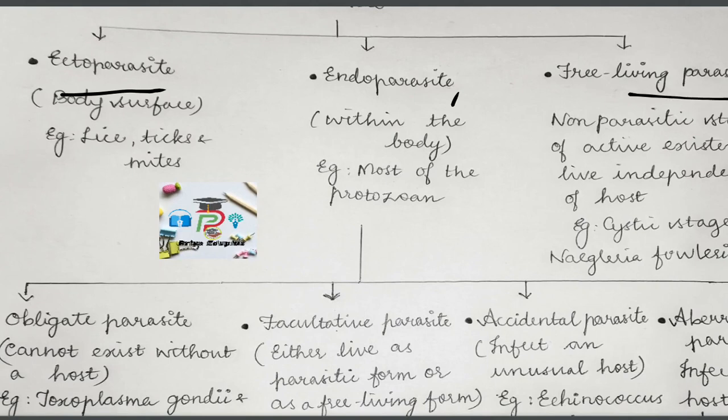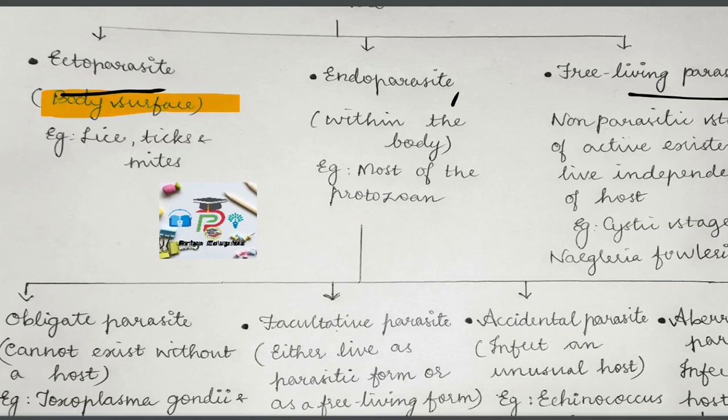What are ectoparasites? Ectoparasites are parasites that inhabit only the body surface of the host. They won't penetrate into the tissue; they will be residing only on the surface of the body. Examples are lice and mites.